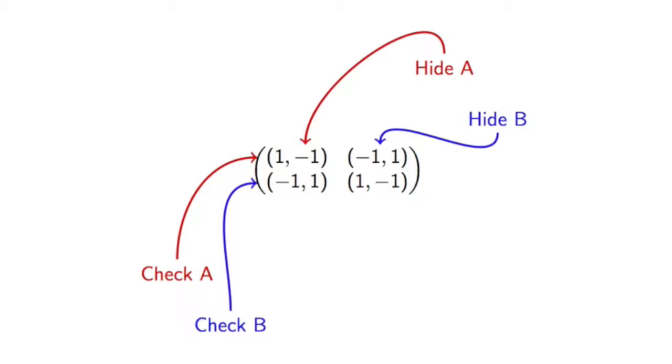And if Ben checks A and I hide in B, then the utility profile is (-1, 1), where I get 1 for not being found, and Ben gets -1 for not finding me.